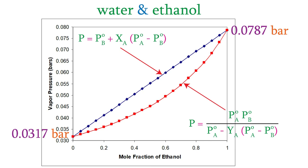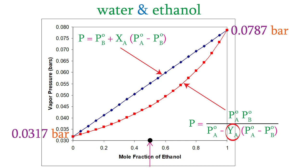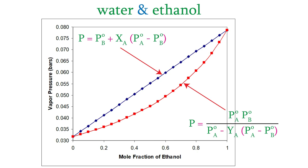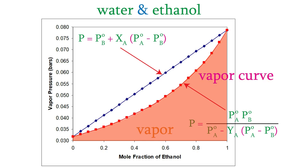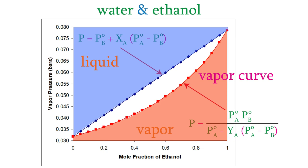Now let's plot the second equation, which uses the mole fraction of ethanol in the vapor above the solution. Suppose we have a mole fraction of 0.5 for ethanol in the vapor. The curve tells us the total vapor pressure is 0.0452 bars. If we try to lower the vapor pressure to 0.03 bars without changing temperature or mole fraction, it can't be done — any liquid immediately vaporizes. So below this curve only vapor is present; it's called the vapor curve. Above the other curve only liquid is present; that's called the liquidus curve.